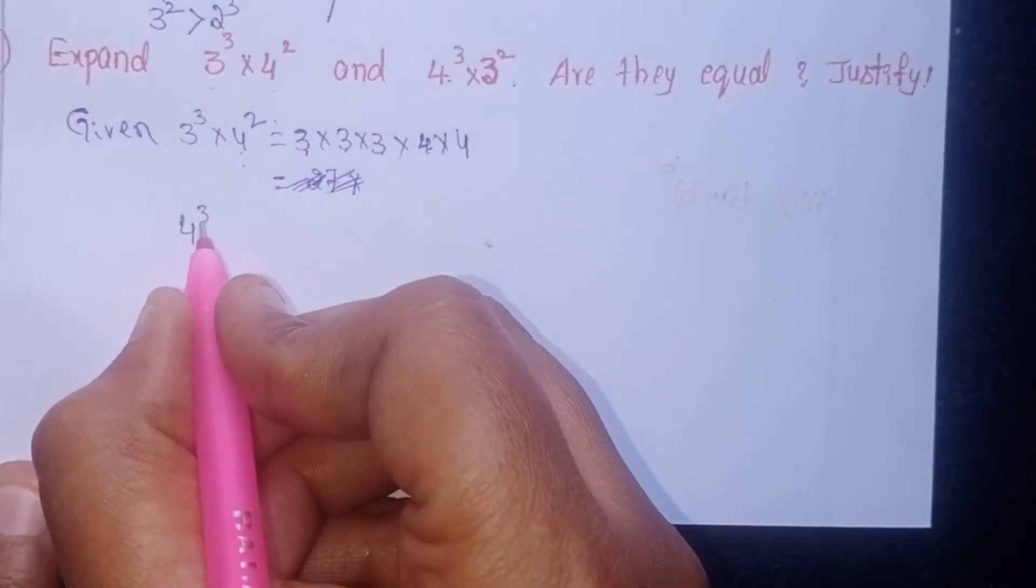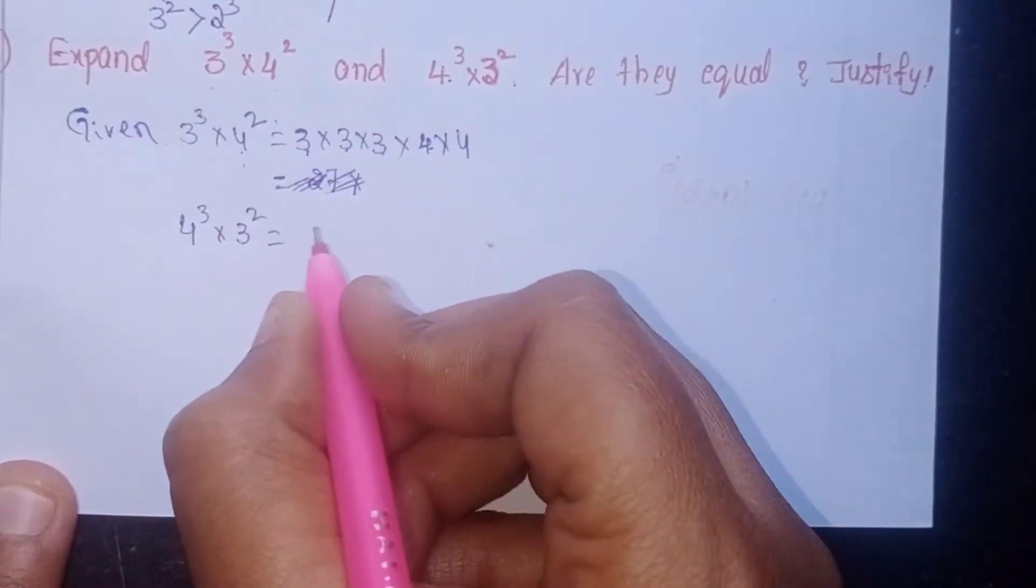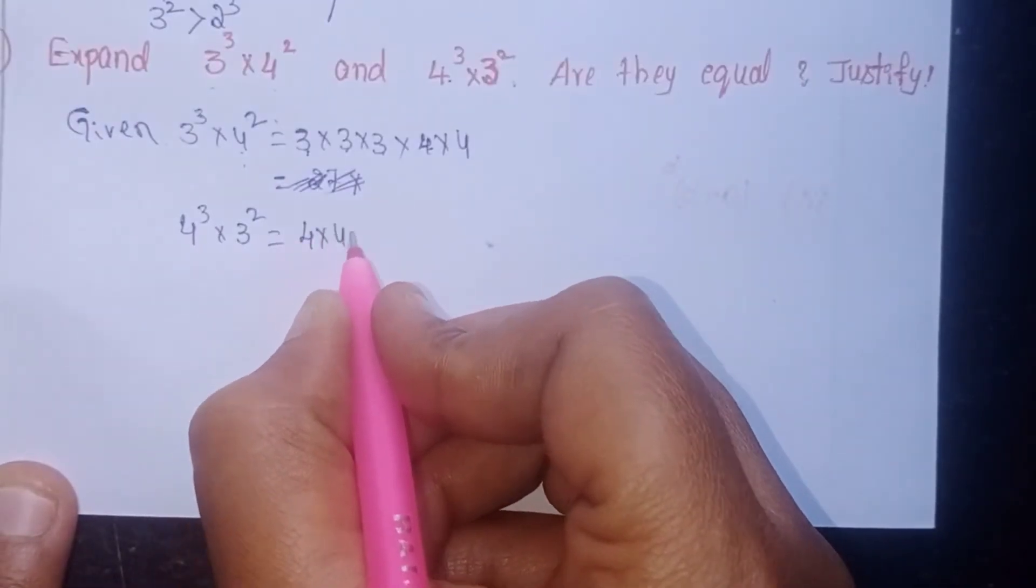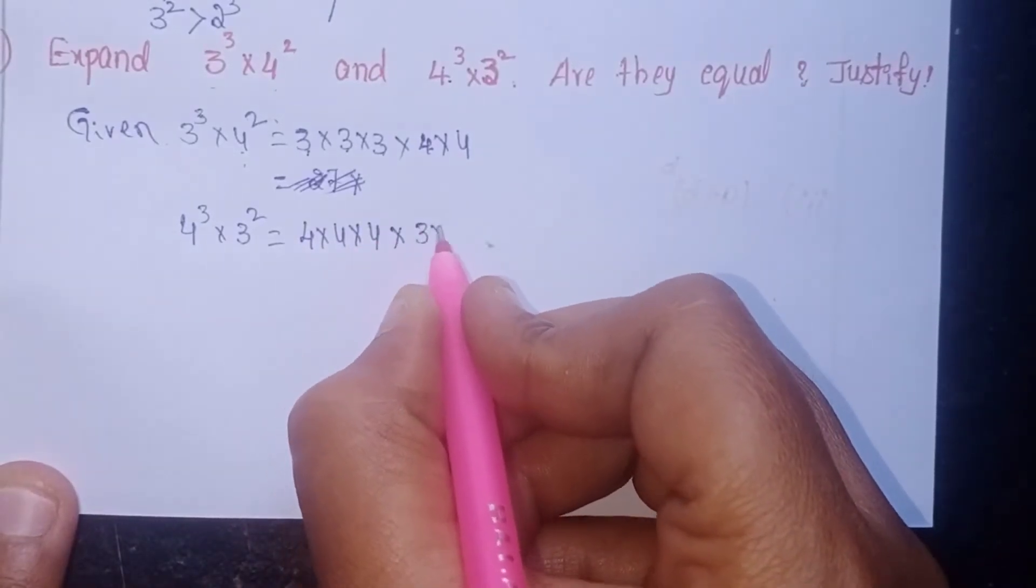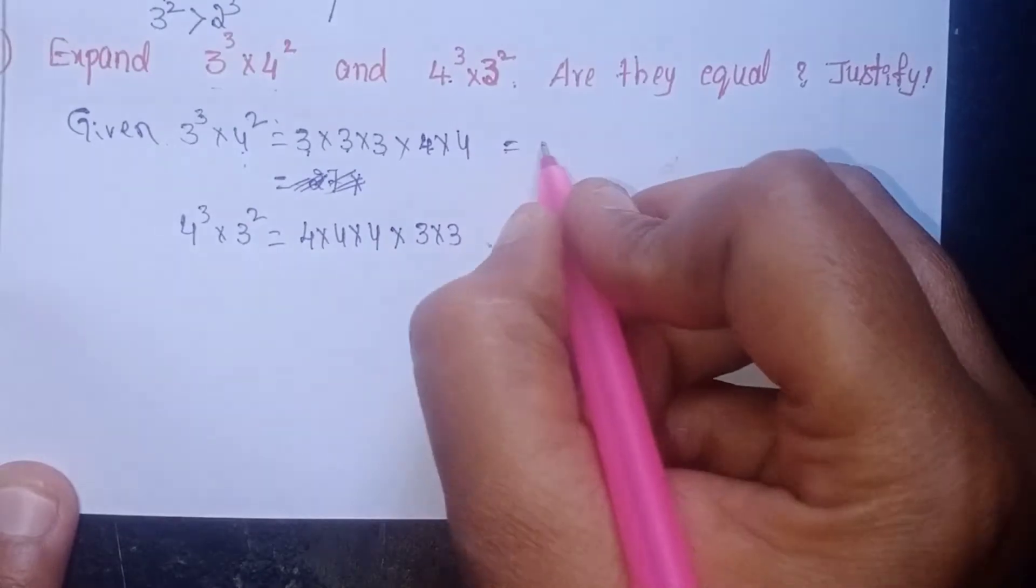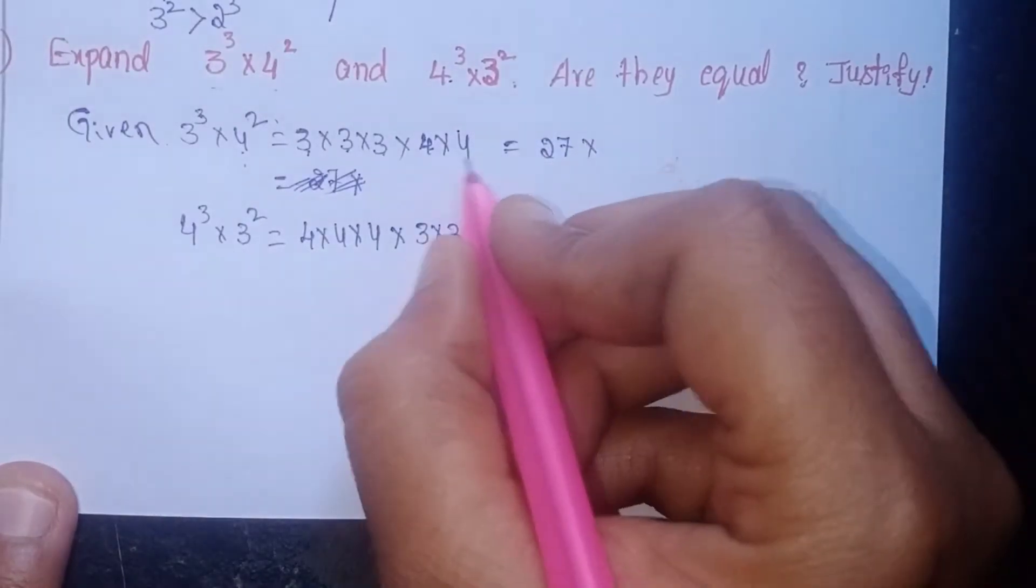The second one: 4³×3². That's 4×4×4 times 3×3. Expanding: 16...